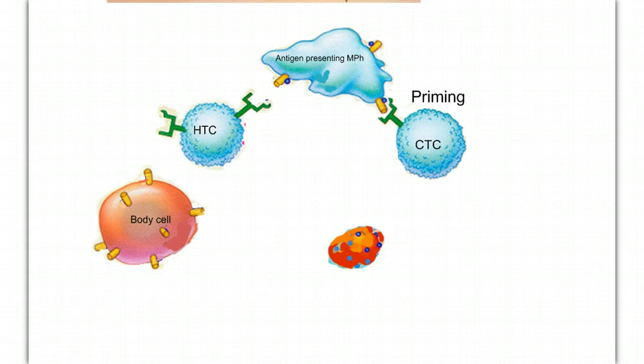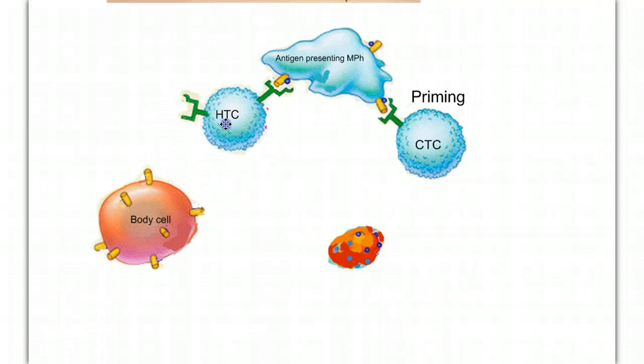This priming allows the cytotoxic T-cell to recognize the specific antigen it's looking for. It's preparing to go search and destroy, but it's waiting for the go-ahead signal from the helper T-cell. When the helper T-cell binds to the macrophage, the macrophage secretes a chemical called interleukin-1.